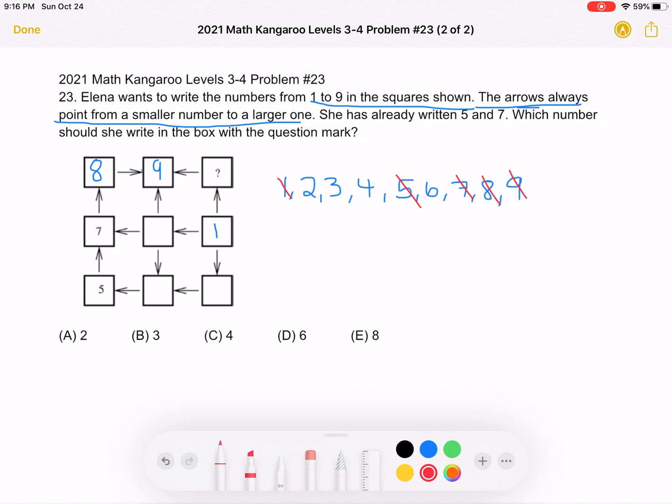Now we have 2, 3, 4, and 6 left to place. Let's take a look at the box next to the 5. We have an arrow pointing toward 5. And 5 is the number greater than the 1 in this box. So what number can be in that box?